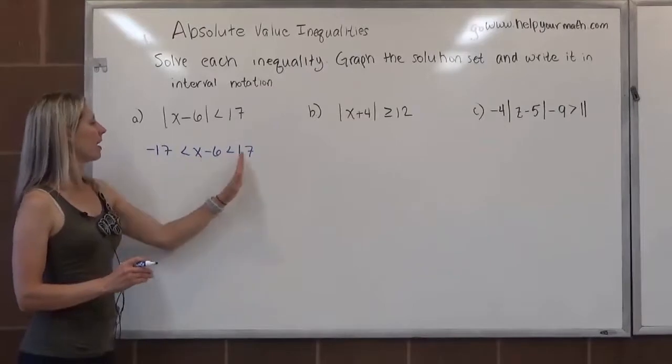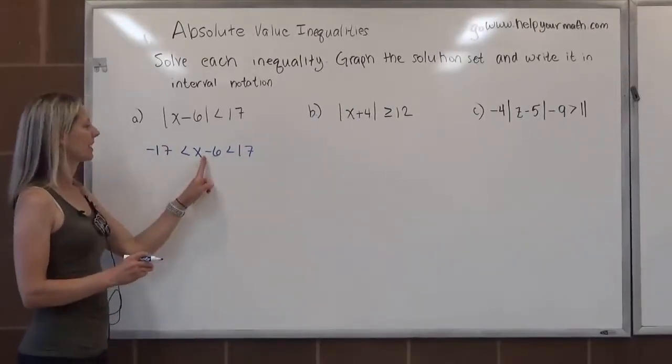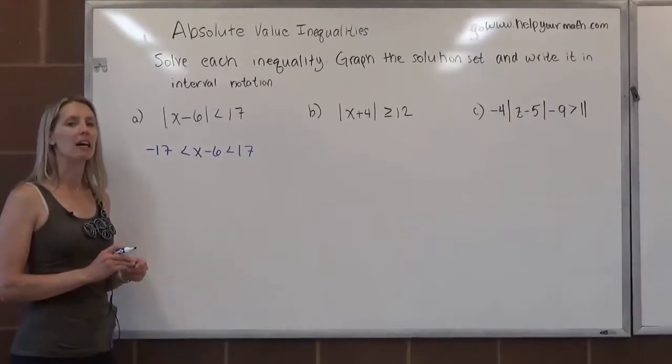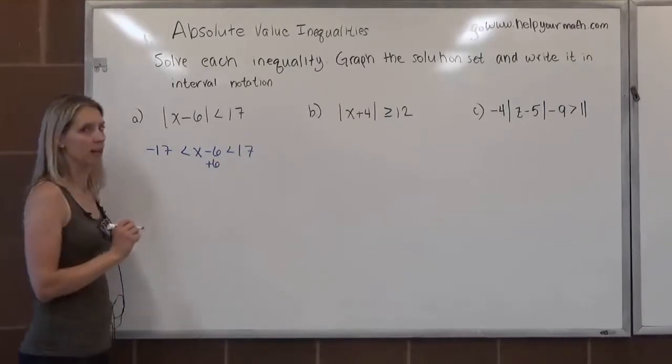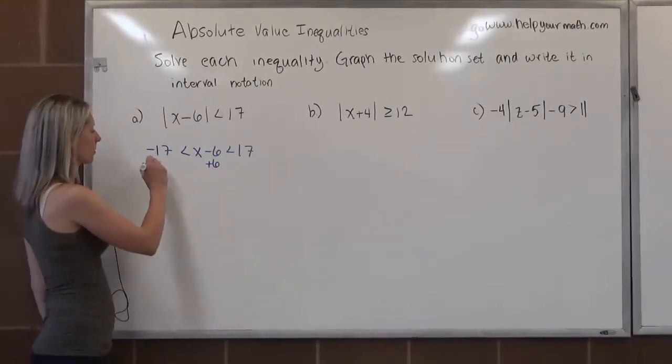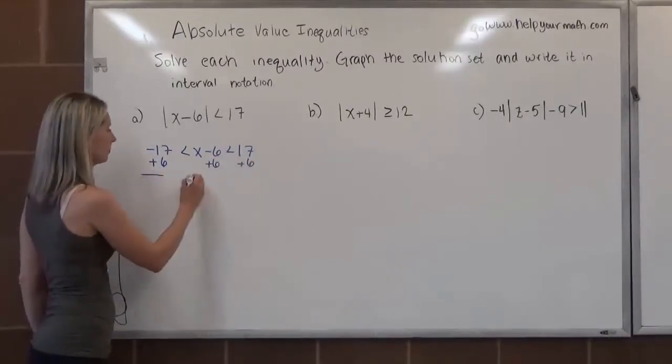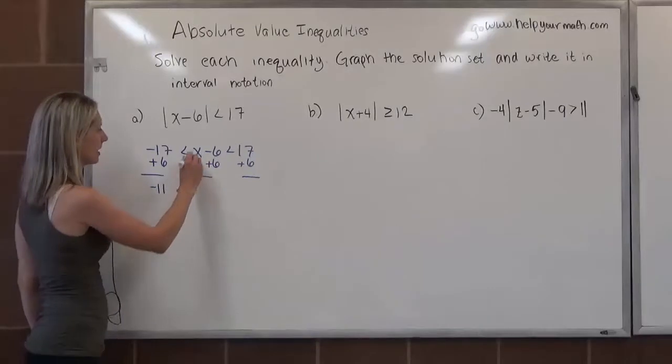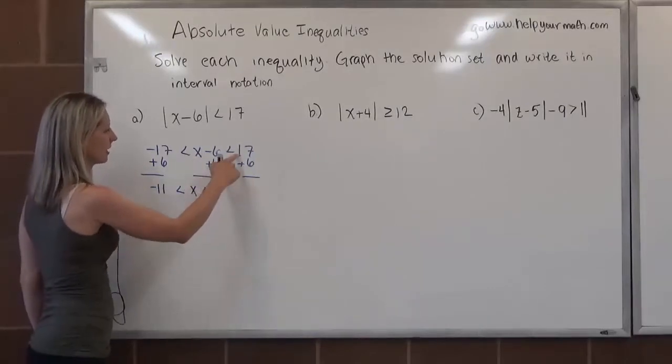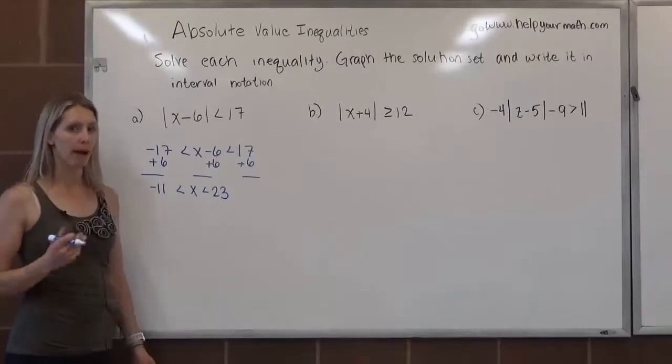This is one of those compound inequalities where we have three sides. We want to get x by itself in the middle. It's being subtracted by 6. To undo that, we will add 6 to all three sections. So we add it in the middle, we add it to the left, and we add it to the right. Negative 17 plus 6, that's negative 11, is less than x, is less than 17 plus 6 is 23. So this would be the algebraic solution.